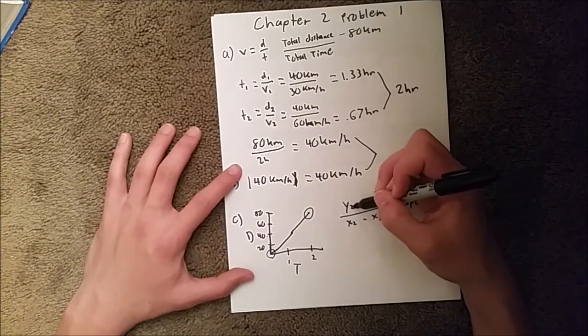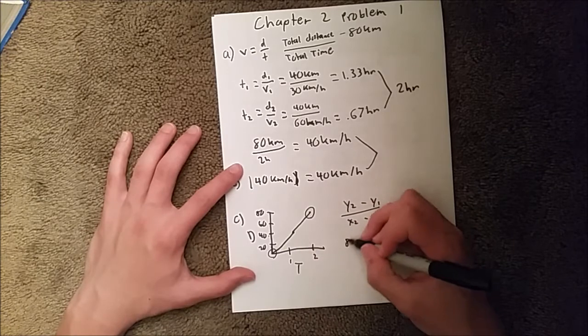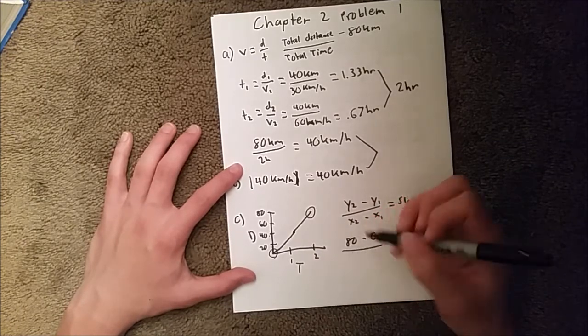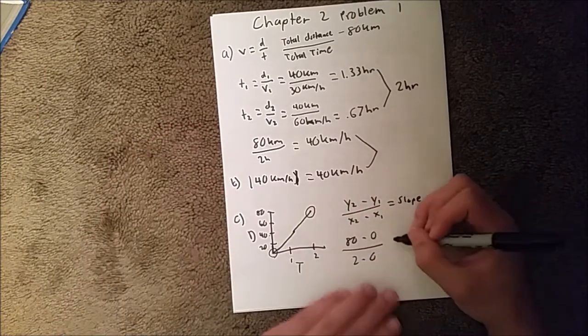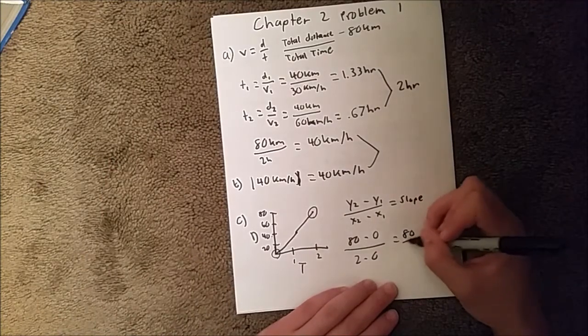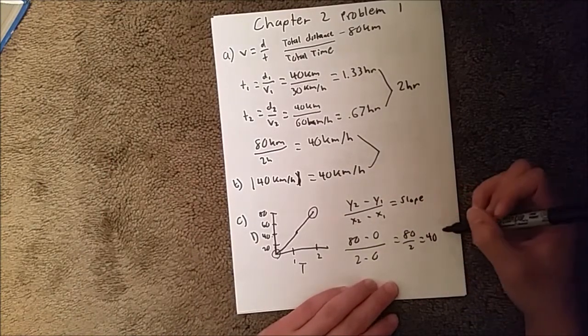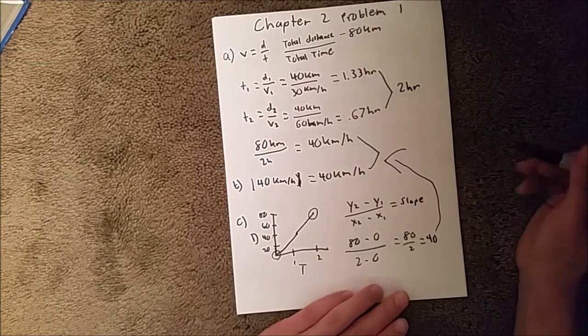And so, we know our Y2 here is 80 minus 0 over 2 minus 0, which is equal to 80 over 2, which equals 40, which is the same thing we got up there.